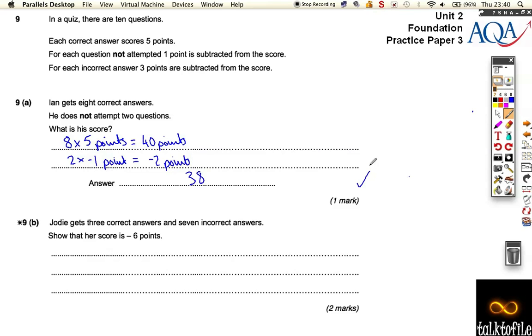Right, Jody gets three correct answers and seven incorrect answers. Show that her score is minus six.